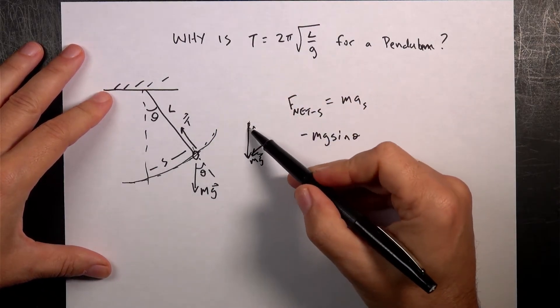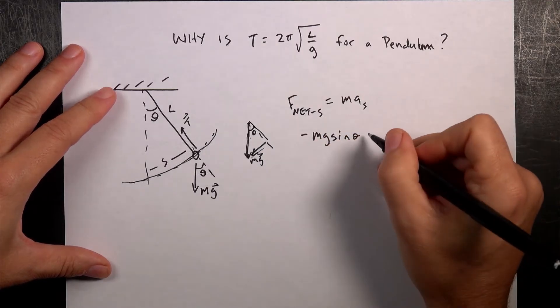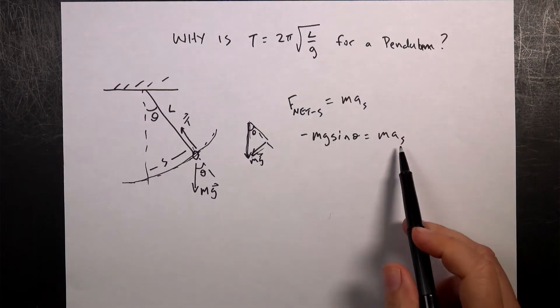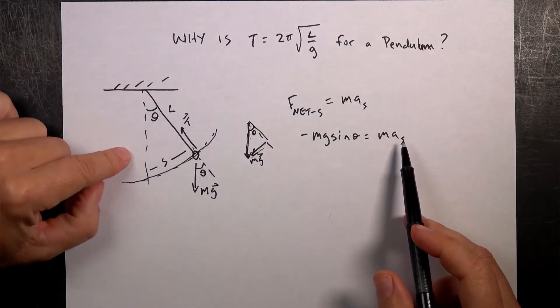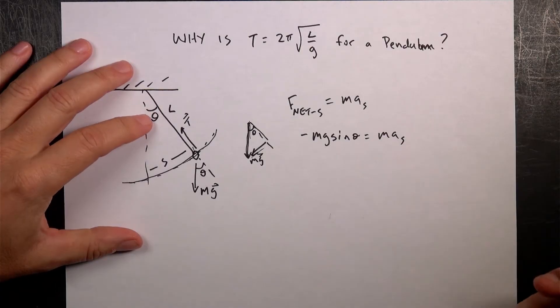And the net force in the S direction is going to be negative mg sin theta. Right, because I'm dealing with, this is mg, this is the opposite side of this right triangle, and so that's sin theta. And that's going to be MA_S.